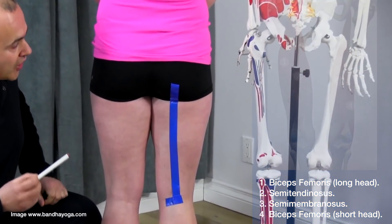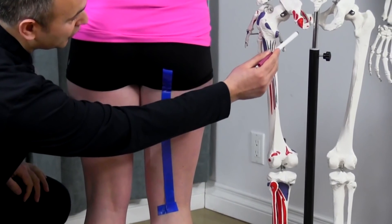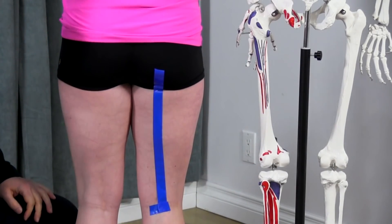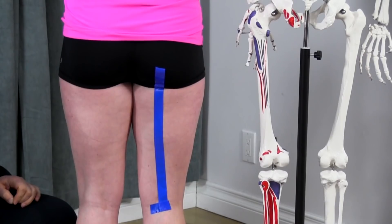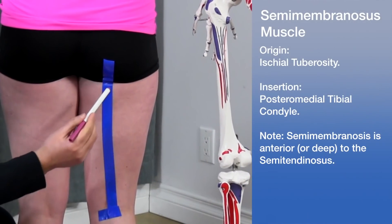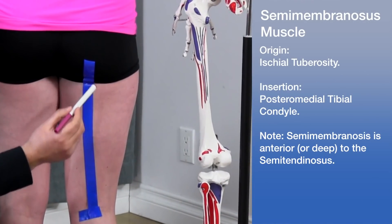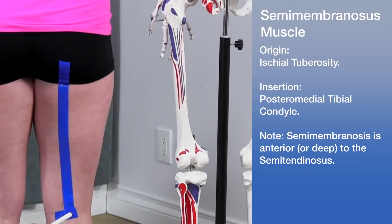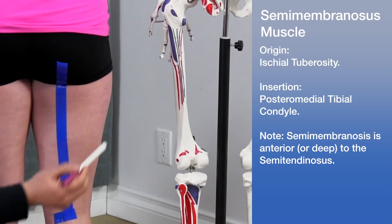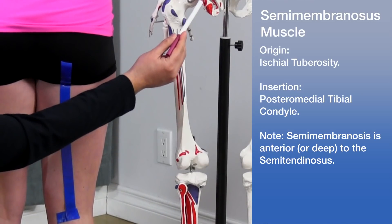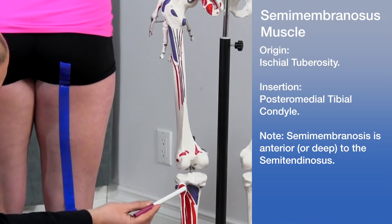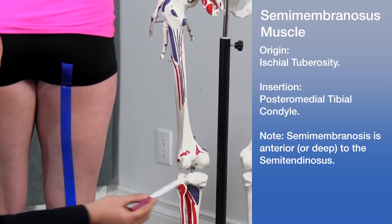All of the hamstring muscles originate off of the ischial tuberosity, coming down, crossing the knee joint and inserting onto the tibia. We'll start with the semimembranosus muscle. The semimembranosus originates off the ischial tuberosity, coming down and inserting on the posterior medial aspect of the tibial condyle. On the skeleton model, you can see it originates here, coming down all the way across the joint into the posterior medial aspect of the tibial condyle.